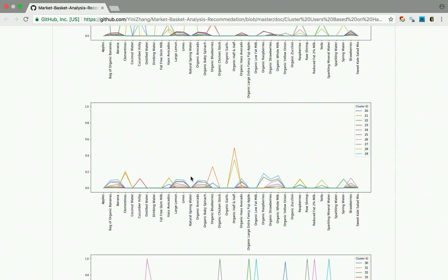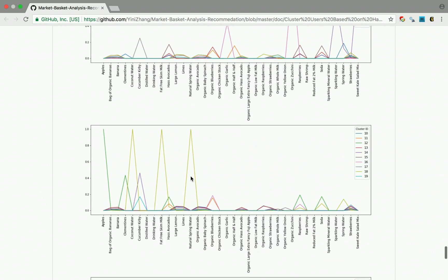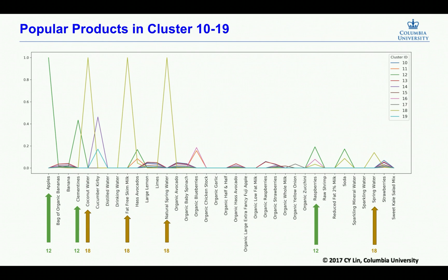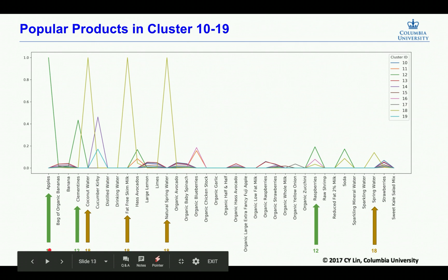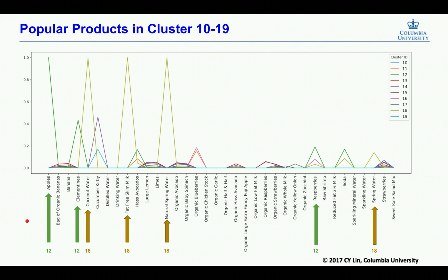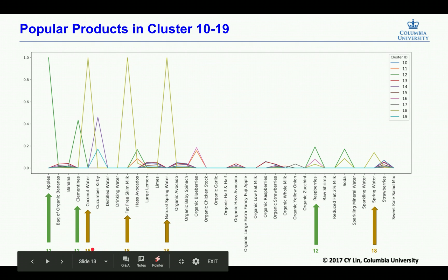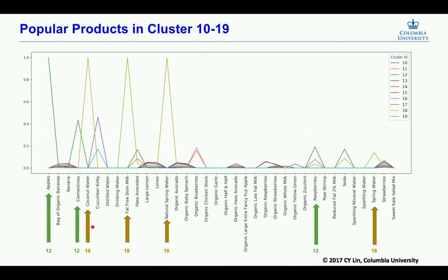Now we will take a look at one of the subplots. For example, these are the most popular products in cluster 10 to 19. We can see that customers in cluster 12, they prefer to buy apples, clementines, and raspberries. While customers in cluster 18 prefer to buy coconut water, fat-free milk, and natural spring water, which are more like healthy drinks. By this, we can distinguish between the products in different clusters and then recommend based on their different clusters.